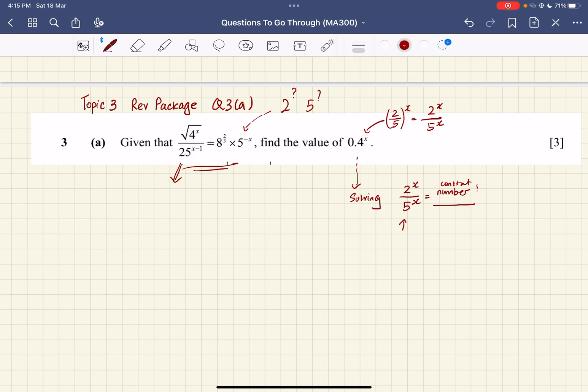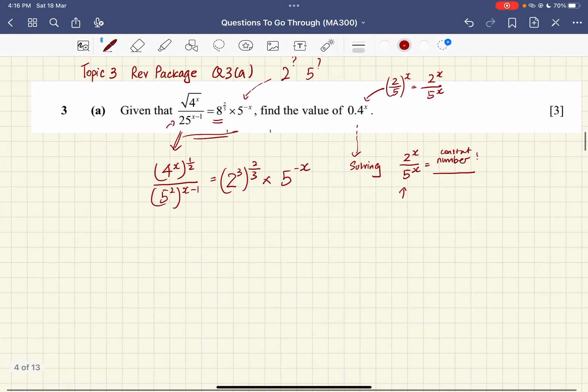Okay, so from here let's try to work towards pushing everything to base 2 and base 5 in this system. Now square root of 4^x is the same as 4^x to the power of 1/2. 25 here is the same as 5^2 to the power of (x-1). On the right-hand side, 8 to the power of 2/3, I'm going to change 8 to base 2, and 5 to the power of negative x I'll keep as is. Now we'll try to push everything to base 2.